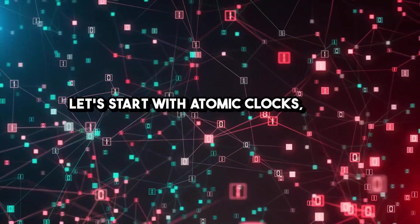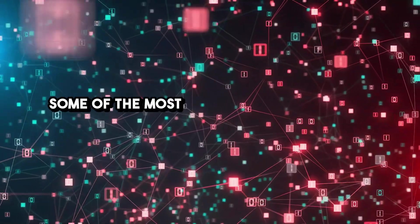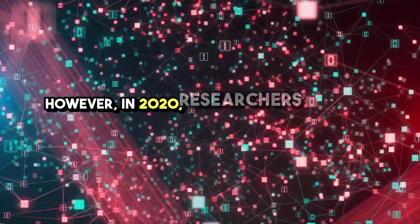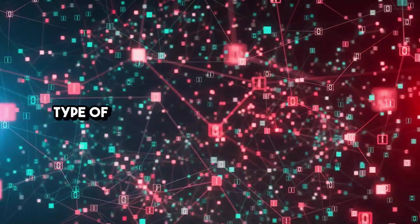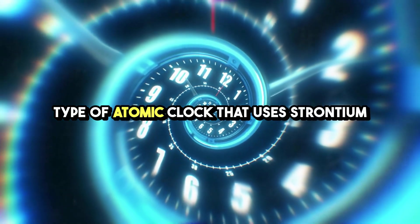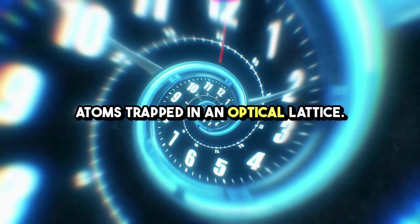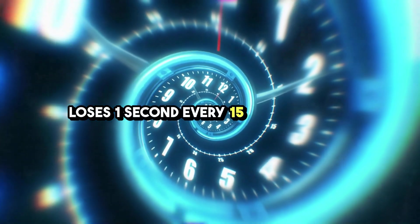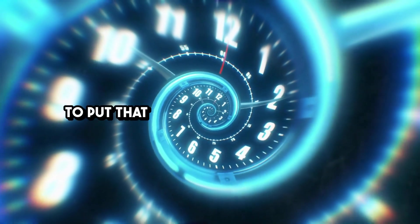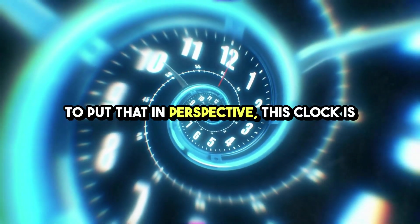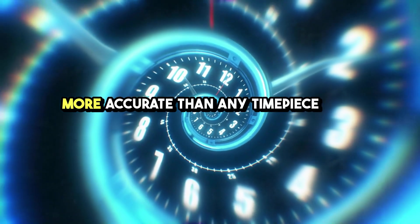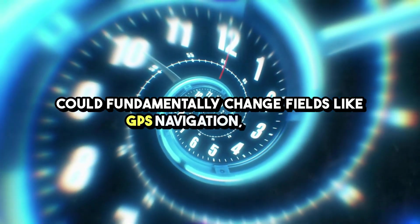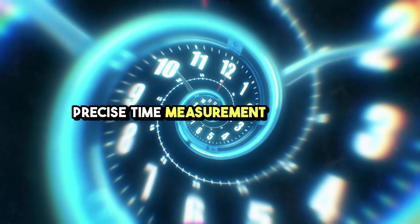Let's start with atomic clocks, which already provide some of the most accurate timekeeping on Earth. However, in 2020, researchers developed a new type of atomic clock that uses strontium atoms trapped in an optical lattice. This clock is so precise that it only loses one second every 15 billion years. To put that in perspective, this clock is more accurate than any timepiece ever created and could fundamentally change fields like GPS navigation, where precise time measurement is critical.